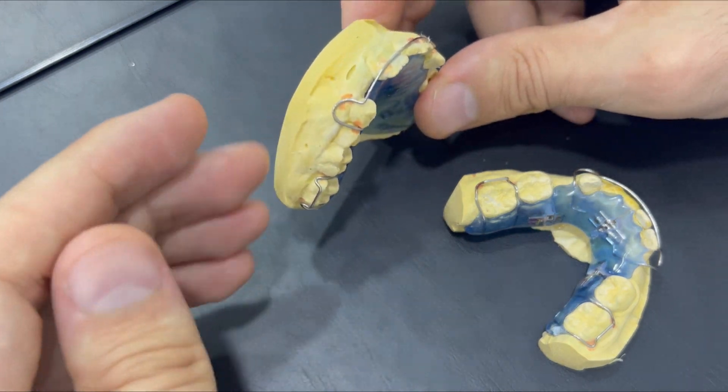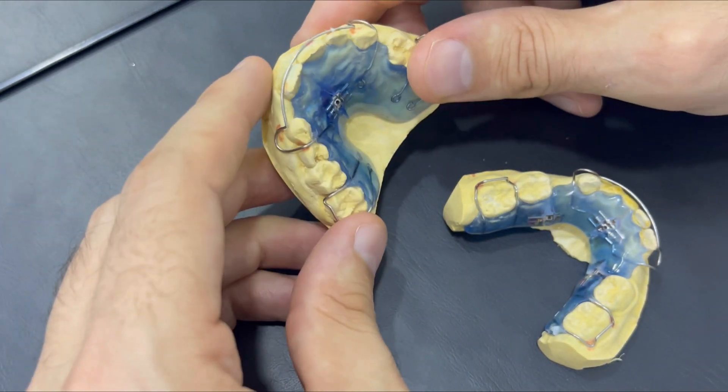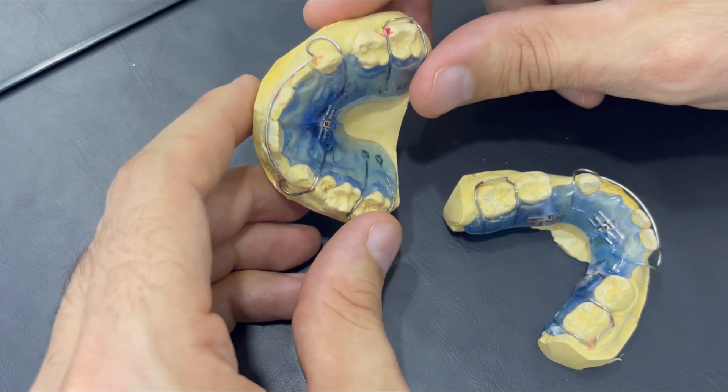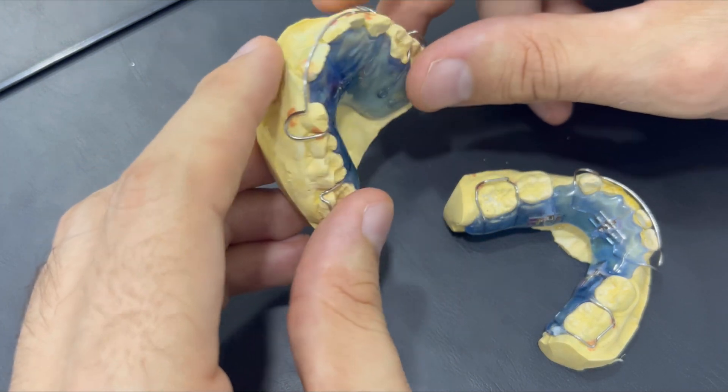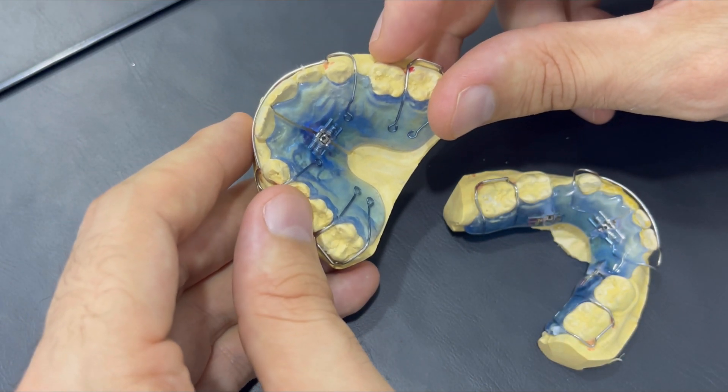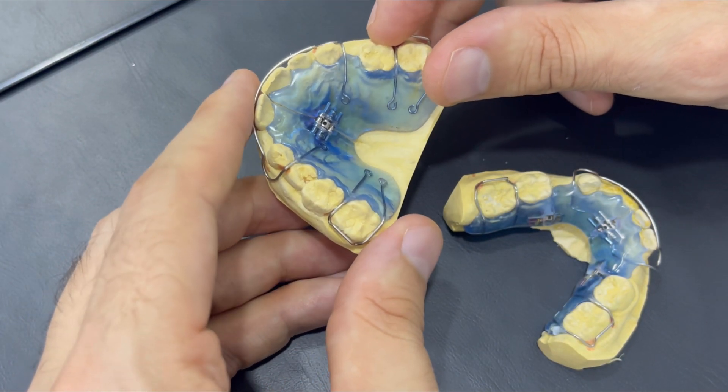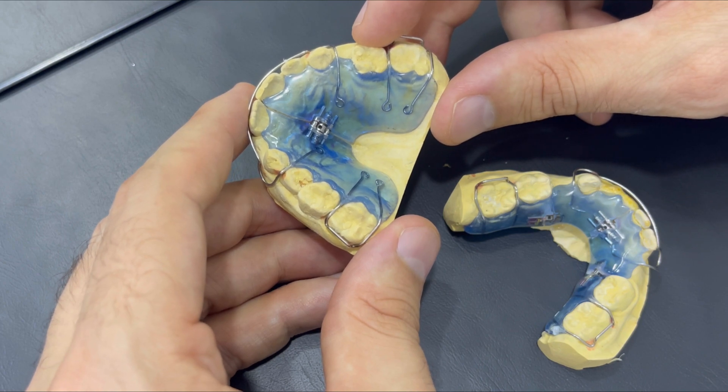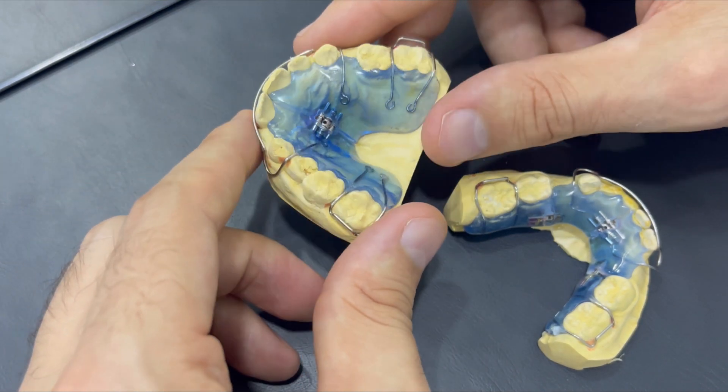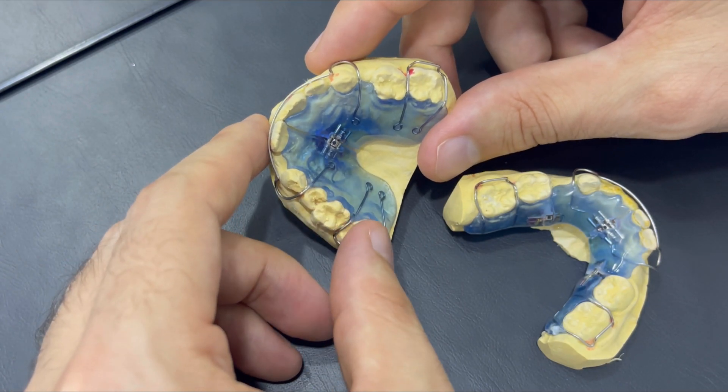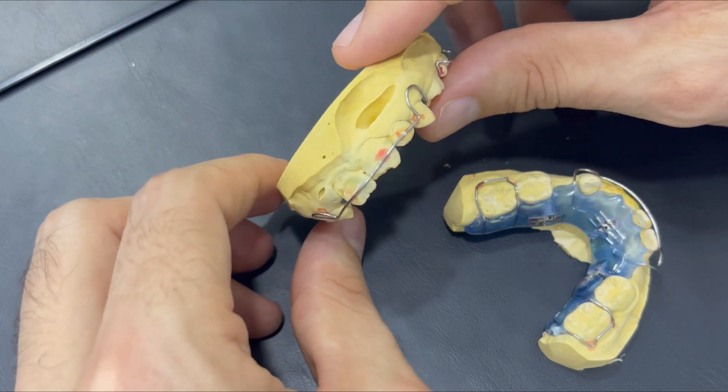So expanding the bone of the maxilla is the preferred goal, but it's minimum in the removable appliance. It's about 20% only with the growing patients. With adult patients, it's exclusively only dental expansion, so inclining the teeth outward.